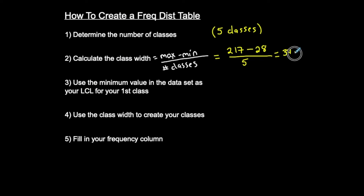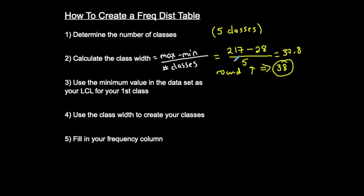Now this is interesting, because you don't typically see a class width that's not a whole number. So what do you do if your class width is a decimal? You're going to round up to the next whole number. So 38 is going to be our class width for this particular frequency table. Round up to the next whole number — so 38 represents our class width. Now I have my class width and the number of classes, so let's start creating the table.